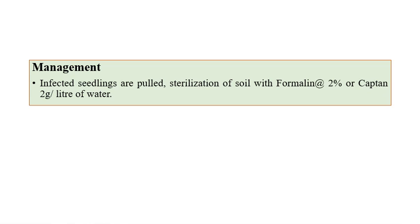For management of damping off: infected seedlings should be pulled out, and soil sterilization with formalin at 2% or Captan at 2 grams per liter of water is recommended.